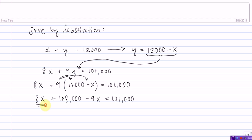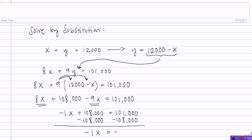Combining like terms gives us negative 1X plus 108,000 equals 101,000. And then subtracting 108,000 from both sides gives us the equation negative 1X equals negative 7,000.